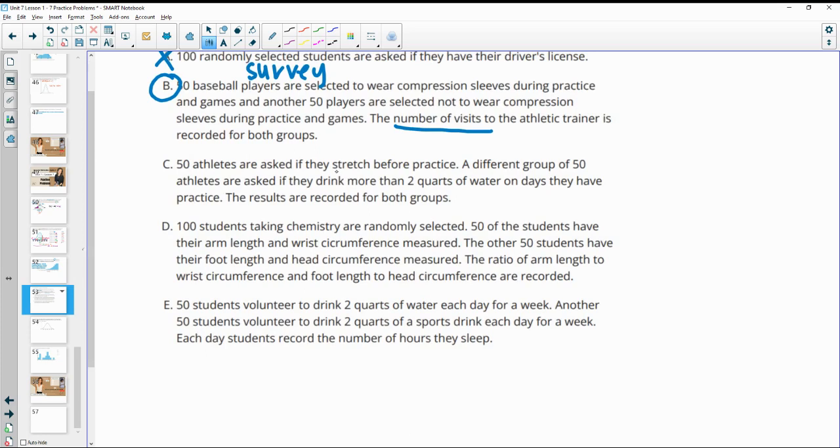C, 50 athletes are asked to stretch before they practice. A different group of 50 is asked if they drink more than two quarts of water a day. And then the results are recorded. So all they did was record the results. So this is just observational. They're not doing anything with the results. They're not seeing if it impacted something. They're just asking people to do it and recording the results. D, 100 students taking chemistry are randomly selected. 50 students have their arm length and wrist circumference measured. The other 50 have their foot length and head circumference. The ratios are recorded. So all they're doing is recording the ratios. No impact on anything else. So again, this is just observational. Just looking and recording.